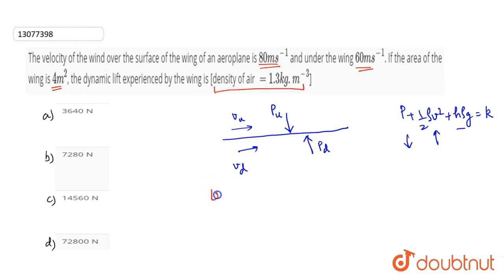Lift is equal to P downwards minus P upward, multiplied by area. If we look at the Bernoulli equation,